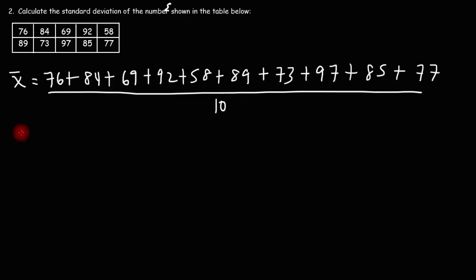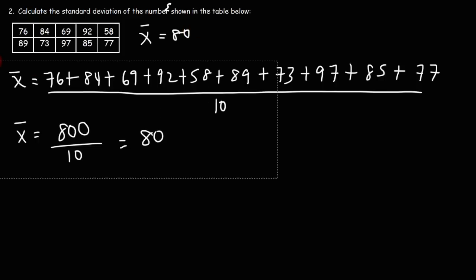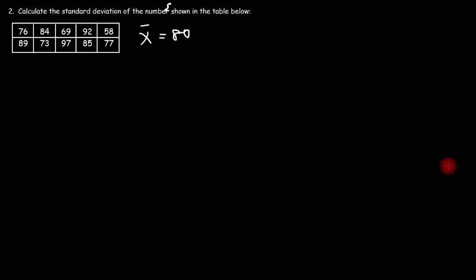So the sum of those 10 numbers is 800. And if we divide it by 10, this will give us an average of 80. So that's the sample mean. Now let's calculate the standard deviation of the sample, using the same formula that we used earlier.